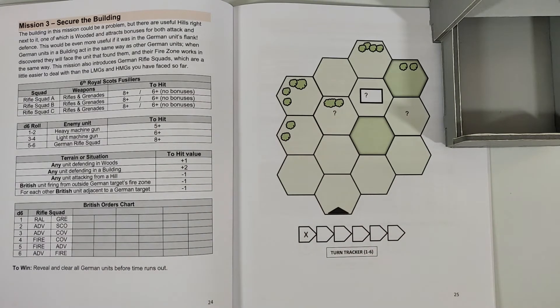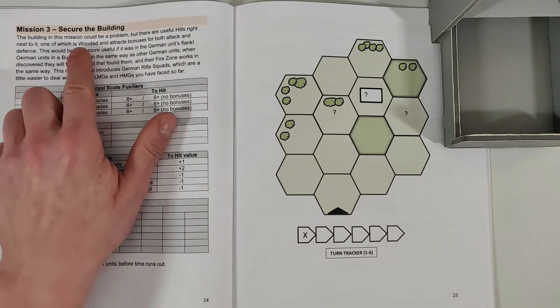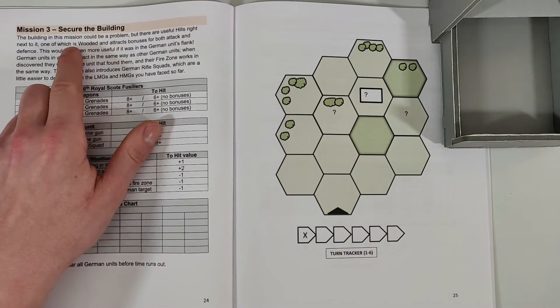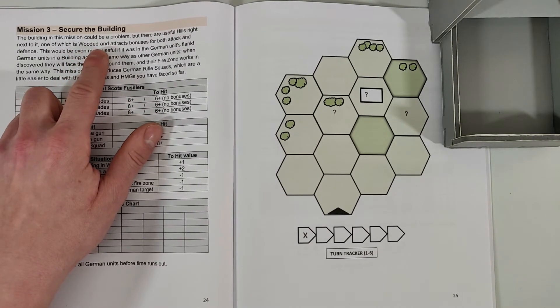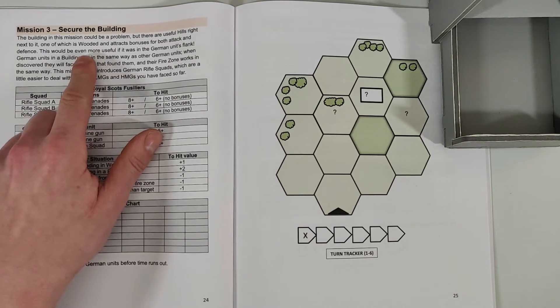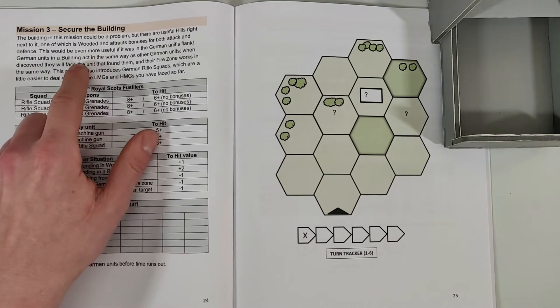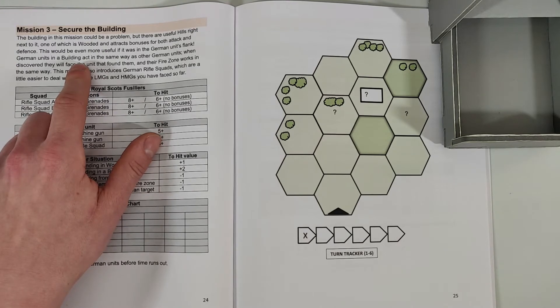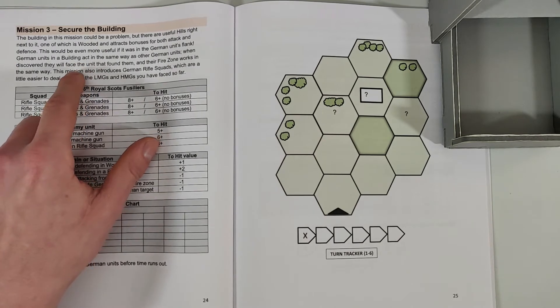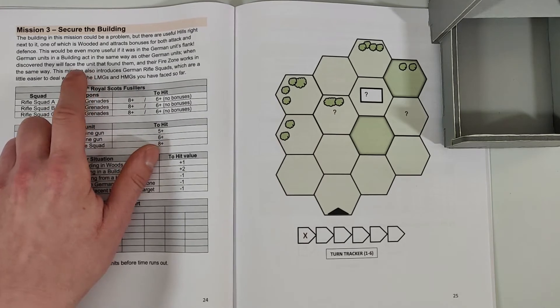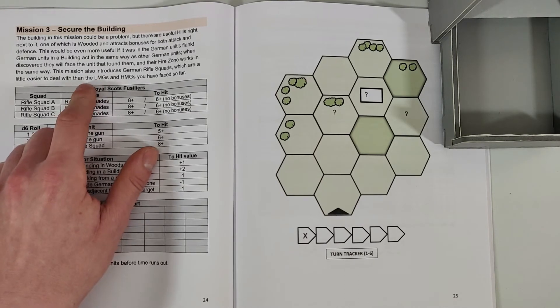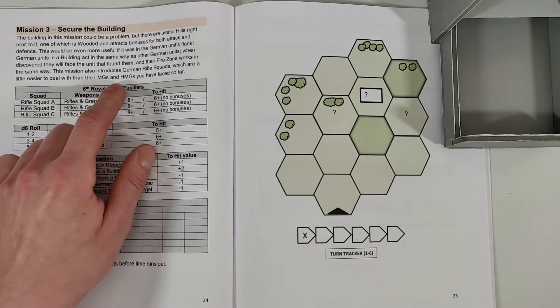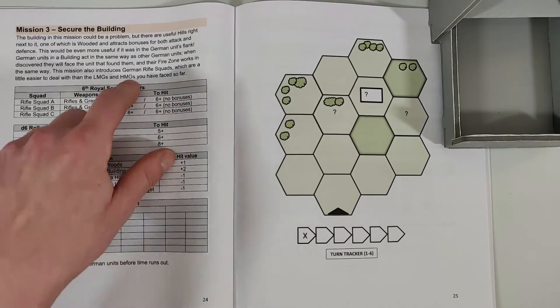Okay, so today we're gonna play mission 3: Secure the Building. The building in this mission could be a problem, but there are useful hills right next to it, one of which is wooded and attracts bonuses for both attack and defense. This would be even more useful if it was in the German unit's flank. German units in a building act in the same way as the other German units when discovered. This mission also introduced German rifle squads, which are a little bit easier to deal with than the light machine guns and heavy machine guns that you have faced so far.